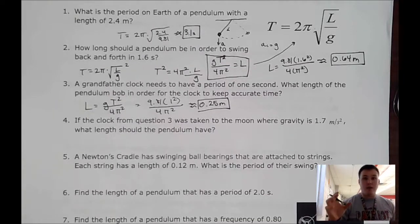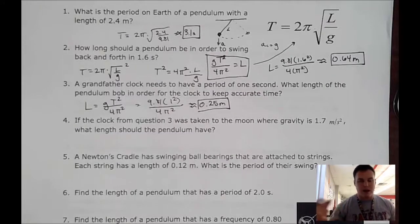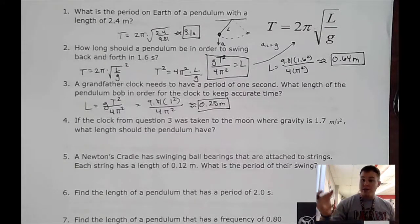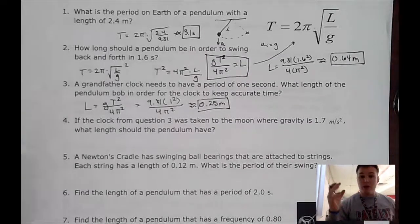So the question is, it's 1.65, but I guess we're going to round it up to 1.7 for this problem. So how long would the arm have to be on the moon so the clock still keeps an accurate time of one second?